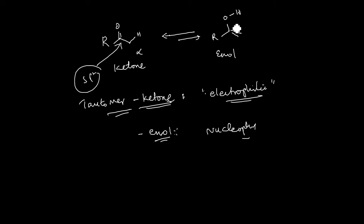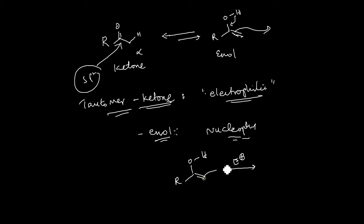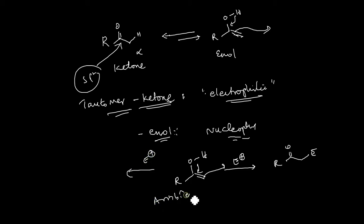The sp2 carbon in enol can donate electrons onto an electrophile and acts as a nucleophile. Not only as a nucleophile — it can also act as an ambident nucleophile. That means, when you have an electrophile, O-enolization, that is O-alkylation, can also happen.